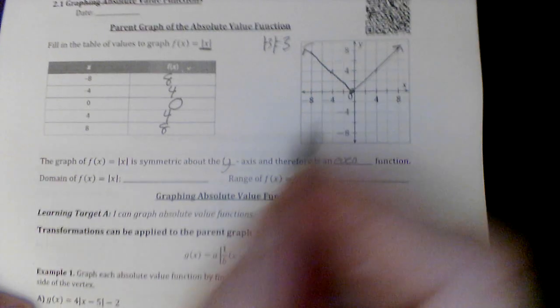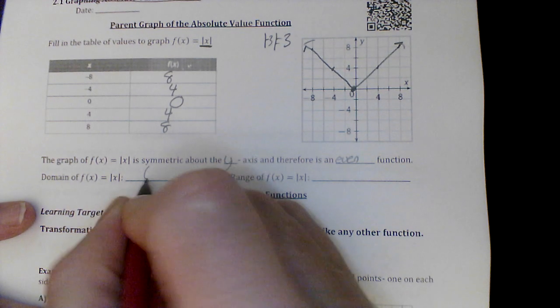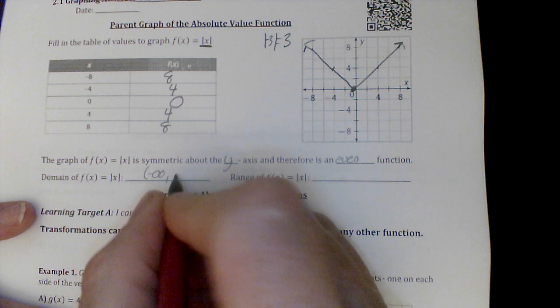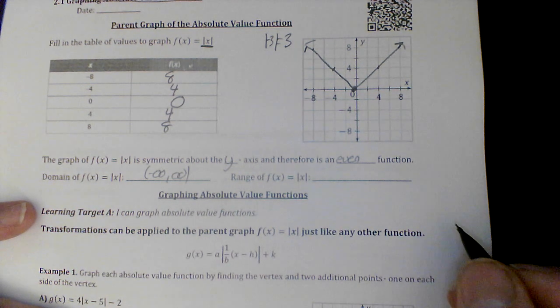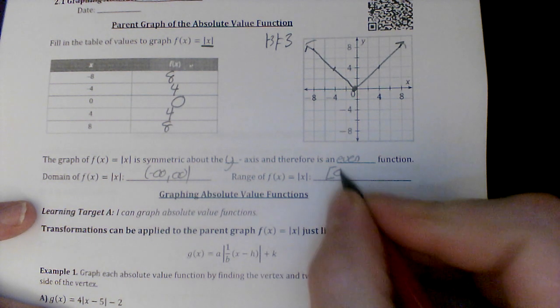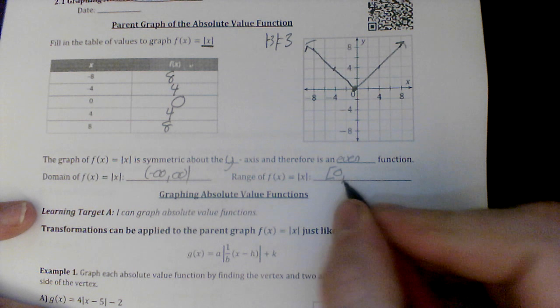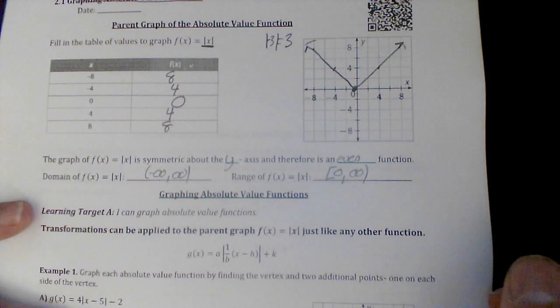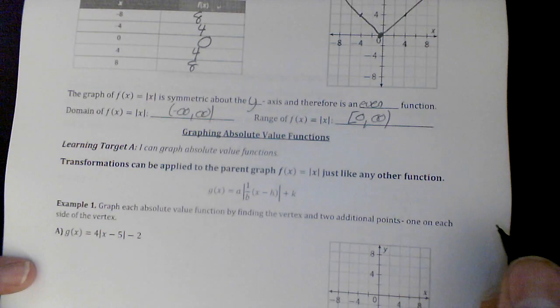All right. Domain, I go left and right forever. So it is from negative infinity to positive infinity, or all real numbers. In the range, it touches 0, notice the bracket here, and goes up to infinity.